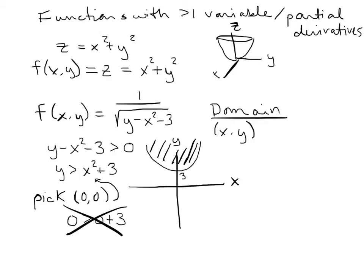Notice there is no equal sign in the inequality, so points on the parabola itself are not included. I'm going to make those boundary lines dashed to show that we can't pick a point on the parabola itself, but anything above it — inside the parabola — we could pick and it would work for that function.